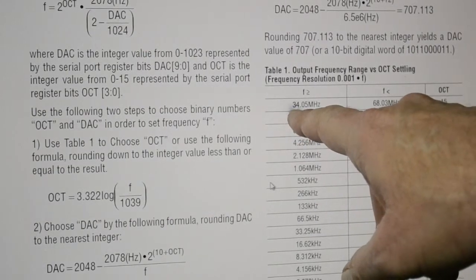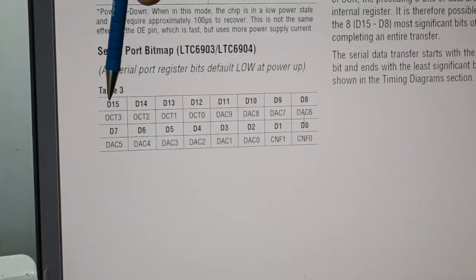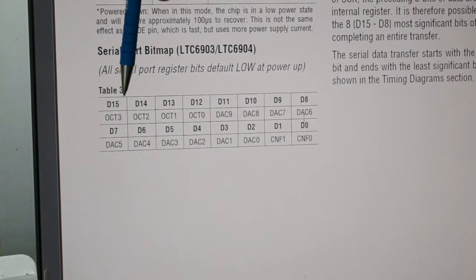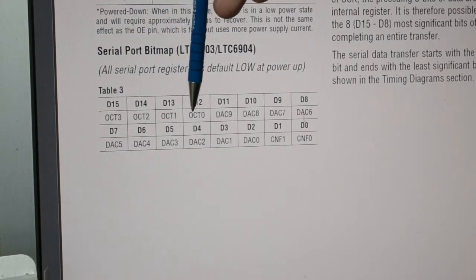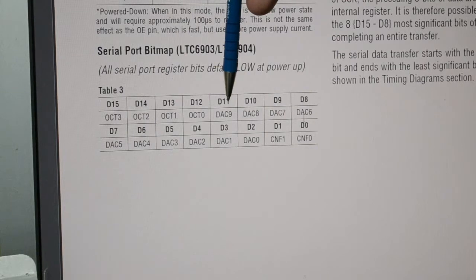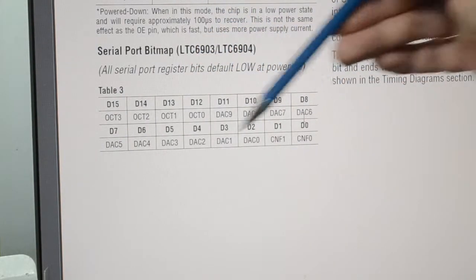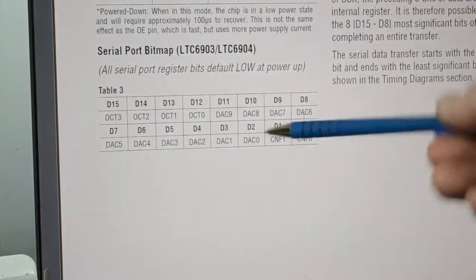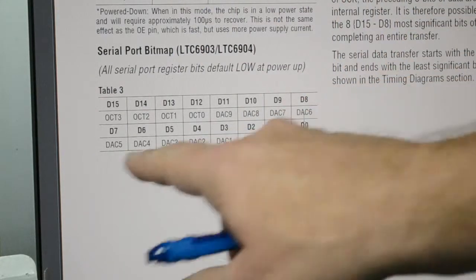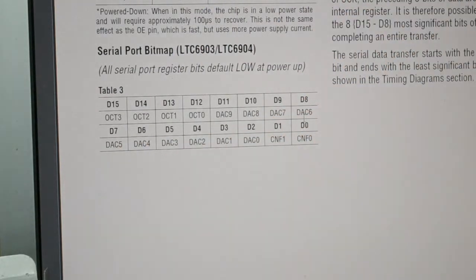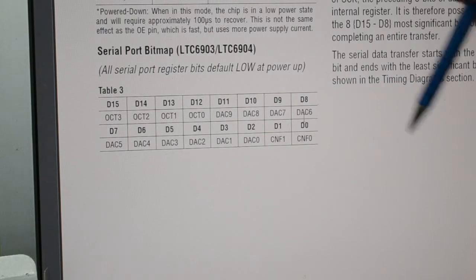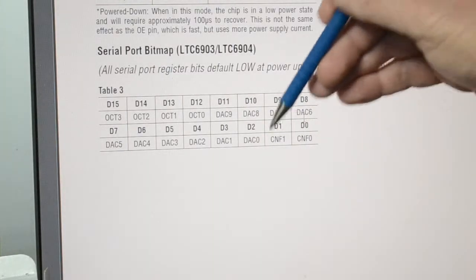So we have the 4 oct bits, and then bit 11 down to bit 2. That's our 10-bit word to adjust the calibration. If you leave all of these at 0, you get the lowest frequency in that band. Put them all to 1s, the frequency goes up. And these last two bits configure the output.